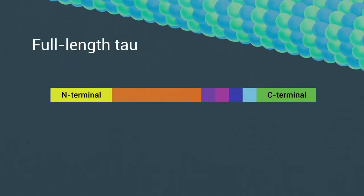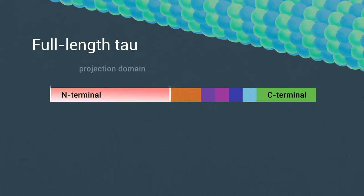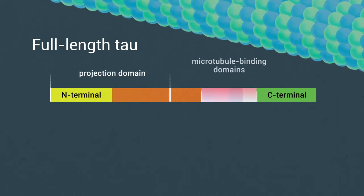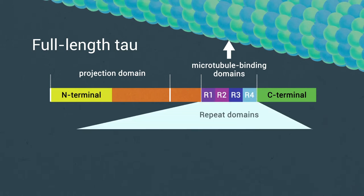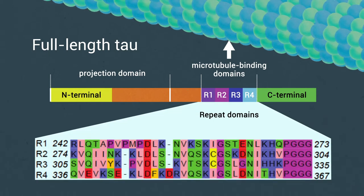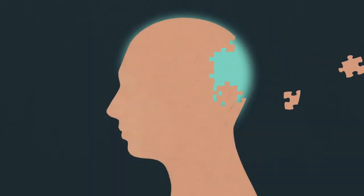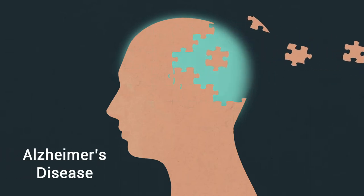Full-length adult tau is intrinsically disordered and includes a projection domain, a microtubule binding region of four imperfect sequence repeats, and a C-terminal domain. Neurodegenerative tauopathies, including Alzheimer's disease,